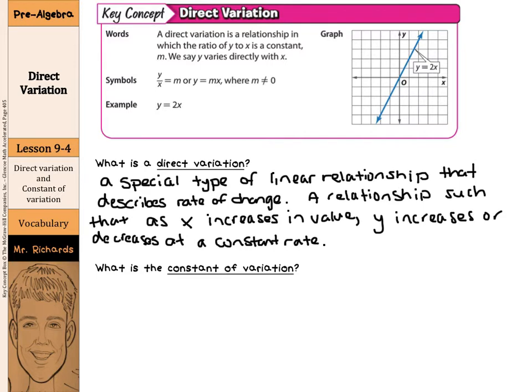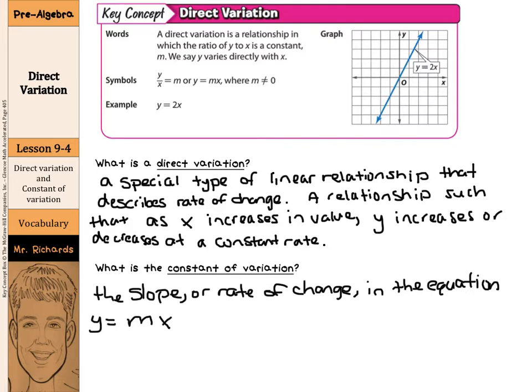The constant of variation is the slope or rate of change in the equation Y equals MX, represented by that letter M.